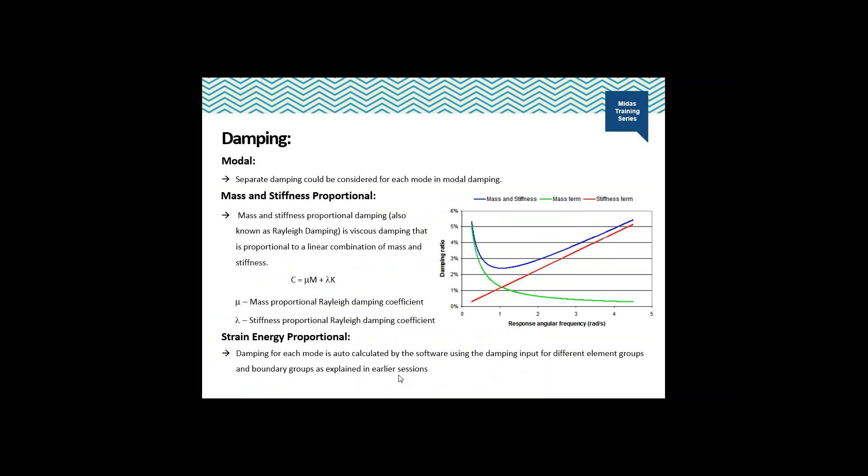Regarding damping: by the modal damping method, general damping coefficients can be applied to all modes. If different damping coefficients need to be assigned to certain modes, that can also be done. Mass and stiffness proportional damping is a viscous damping proportional to a linear combination of mass and stiffness. This type of damping helps avoid non-conservative over-damping of high or low frequency response. Different damping can be applied to different modes, and hence Rayleigh damping is a subclass of complete modal damping.